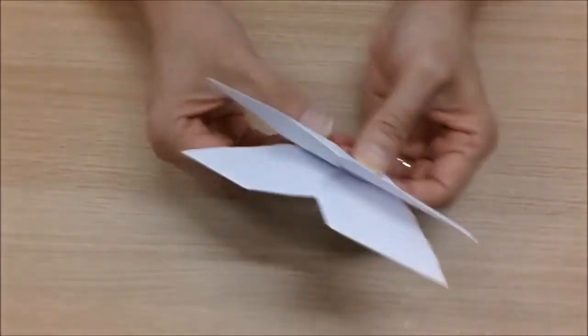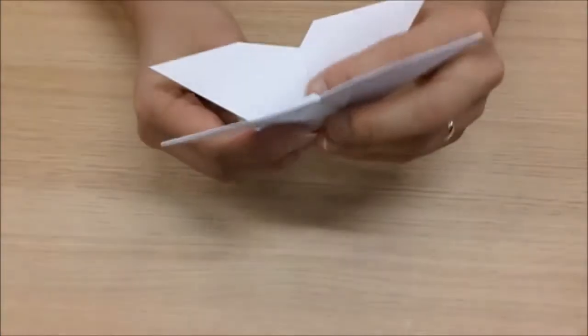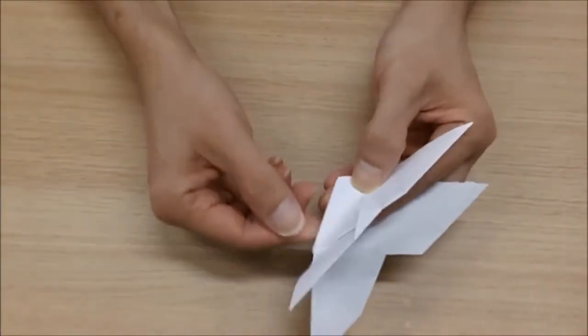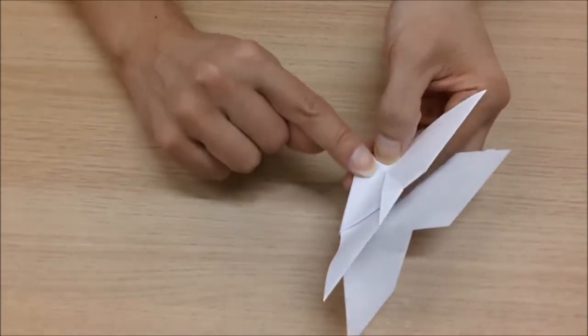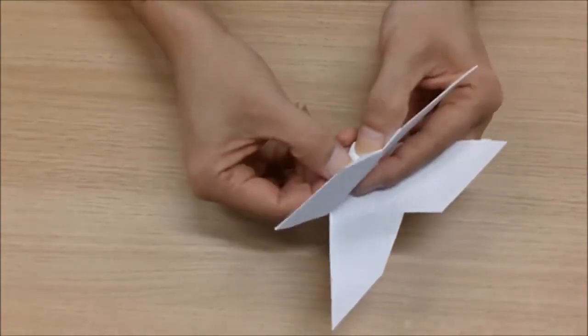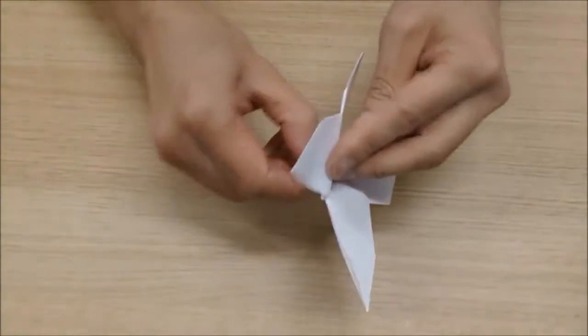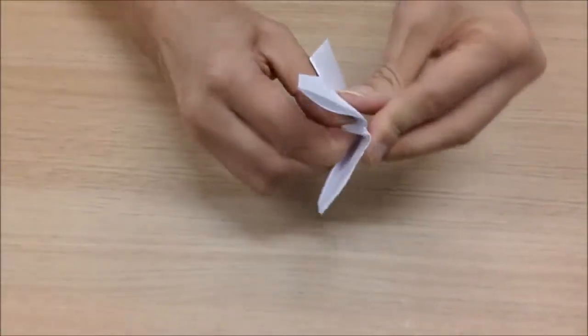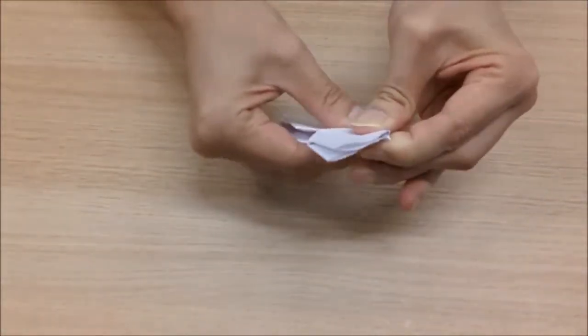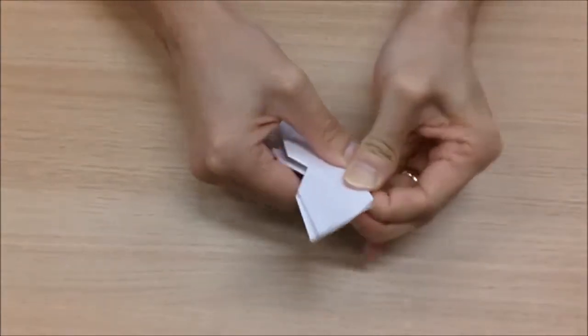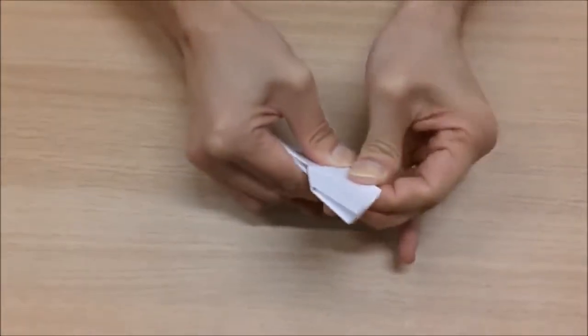And we, again, along a similar crease going from this corner here to around about there, we fold the butterfly wings back once again on both sides. Like so. Press down very, very firmly.